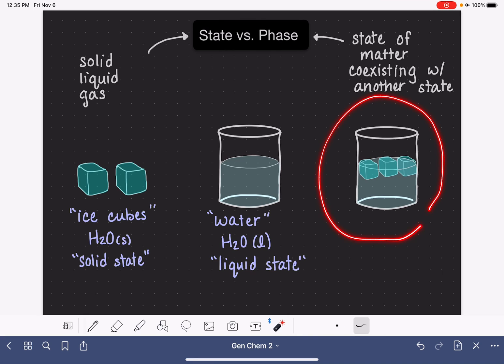This right here would be an example of a situation where it would be appropriate for us to use the word phase. In this particular beaker we have what we would commonly call ice water. This is a combination of water molecules that are in the liquid state and also water molecules that are in the solid state.